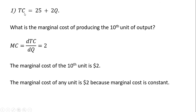Example one: we have this total cost equation, 25 plus 2q. What is the marginal cost of producing the tenth unit of output? The first thing we need is marginal cost. The marginal cost is the derivative of total cost, so the derivative of 25, a constant, is 0, and the derivative of 2q is just 2. So the marginal cost of producing the tenth unit is $2.